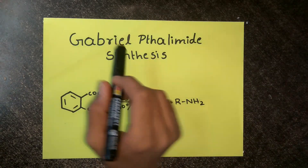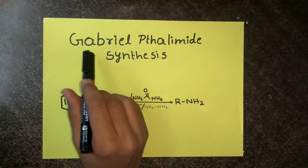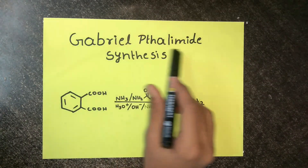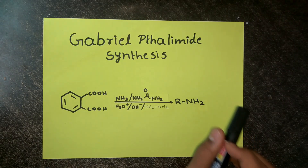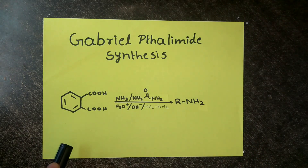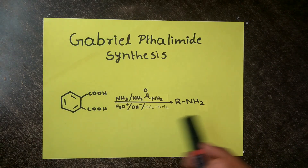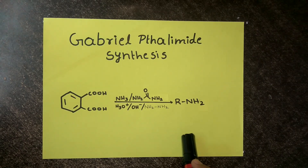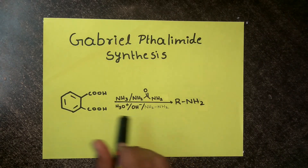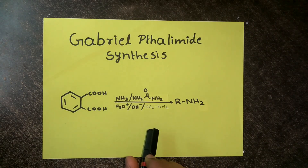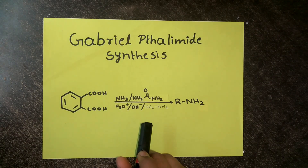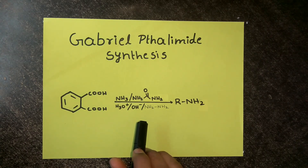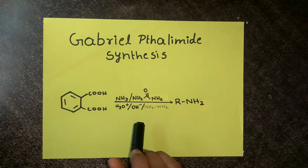In this video we're going to talk about Gabriel phthalimide synthesis. In this reaction we convert a molecule of phthalic acid into an amine. Let's divide this video into two parts: part one includes synthesis of phthalimide, and the other part is about conversion of phthalimide into an amine.